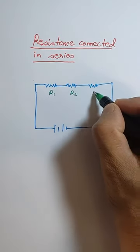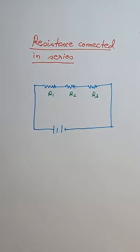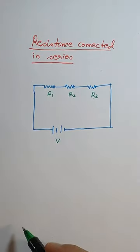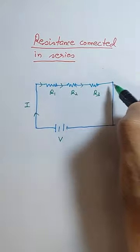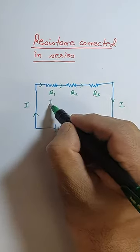So the resistances are R1, R2, and R3. You can see this is a series connection. Now considering this as a V volt, now current I is flowing. Now see, current I will flow in all three resistors because they are in series.